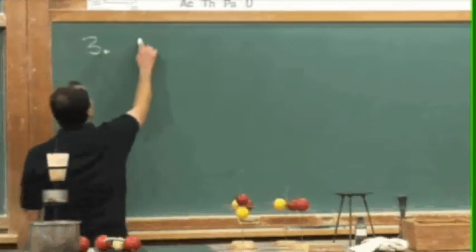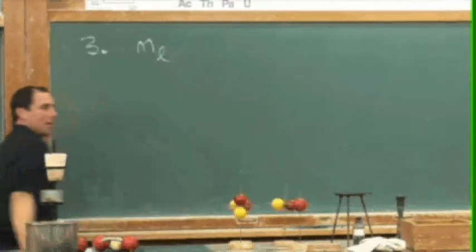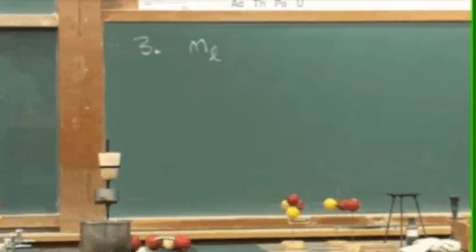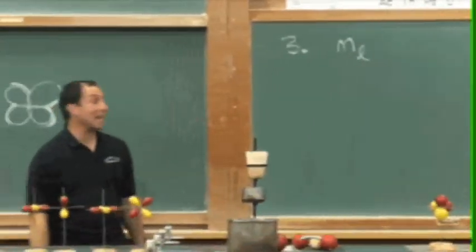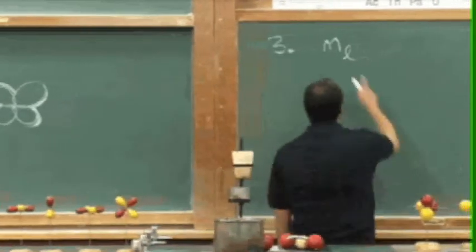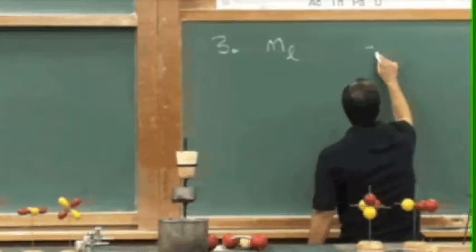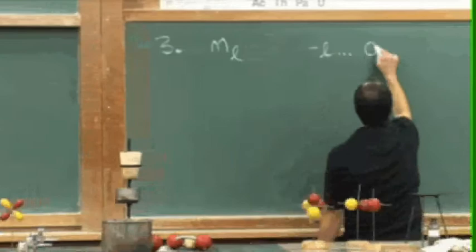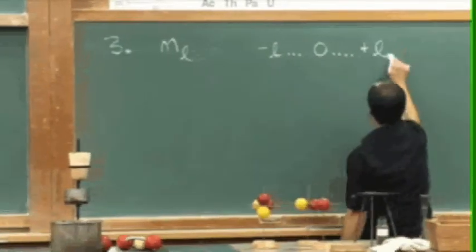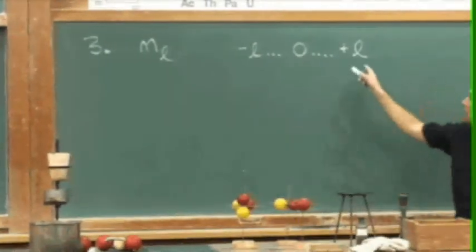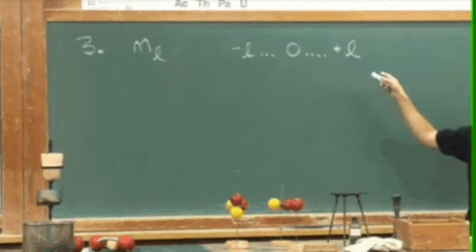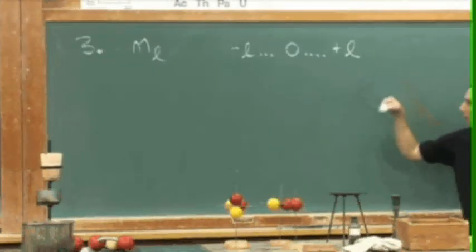The third quantum number has a symbol of lowercase m subscript l, and this is often known as the magnetic quantum number. This m sub l value goes from negative l through the origin to positive l. Mathematically, that looks a little hairy at first, but really once you do this a couple of times, you got it.